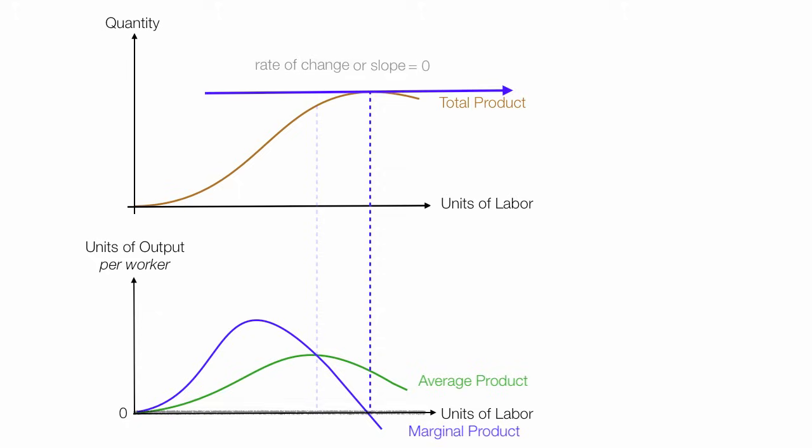And anything beyond this point, the slope is negative. So now I have three distinct regions or stages. I have stage one, which is the first part there, stage two, and stage three.